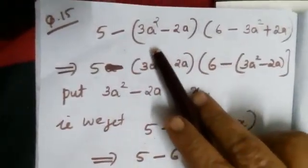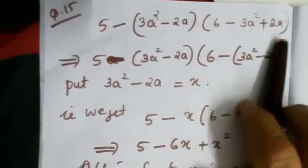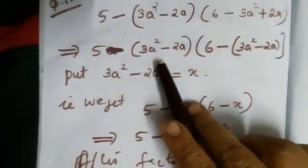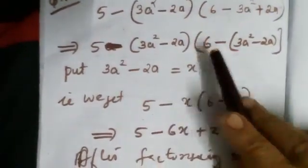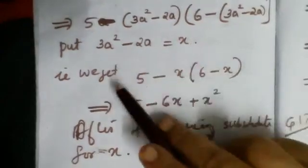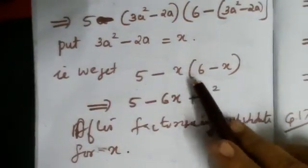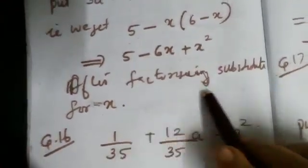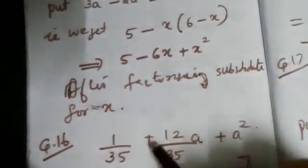Question No. 15: (5-(3a²-2y))(6-(3a²+2y)). Arrange this as (5-(3a²-2y))(6-(3a²-2y)). Then put 3a²-2y = x. We get (5-x)(6-x) or 5-6x+x². Then after factorizing, substitute for x.